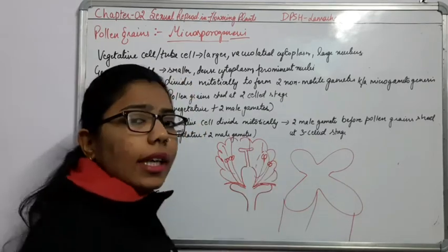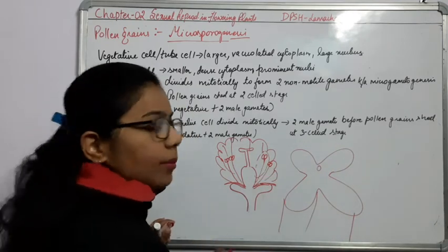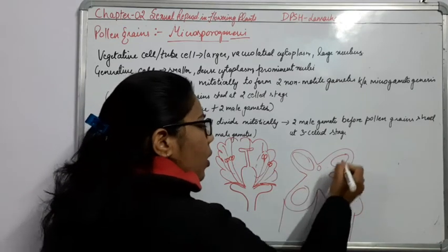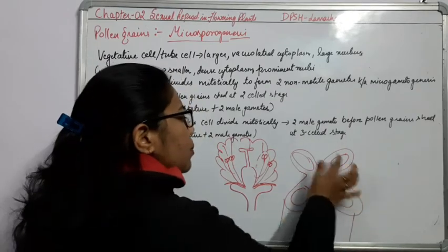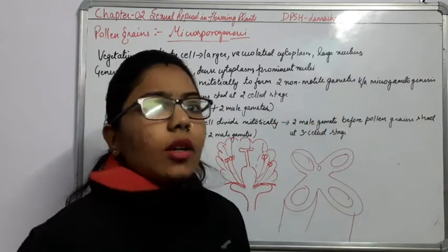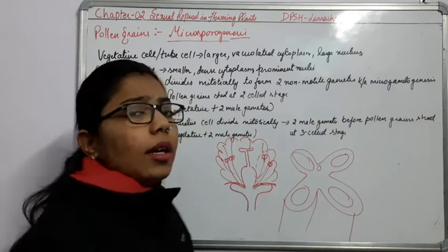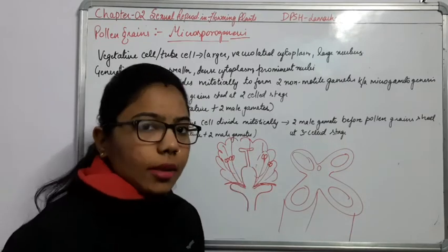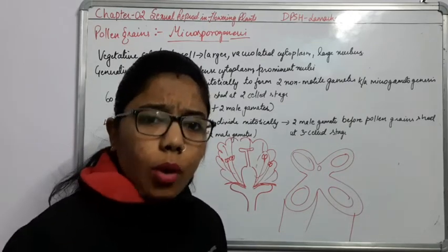They are the dithecas and with the help of a connective they are attached to each other. In each of the thecas you will get the pollen sac. Inside this pollen sac there will be formation of pollen grains, and when they go outside, they will release the pollen grains which will reach into the female gametophyte and attach to the stigma.